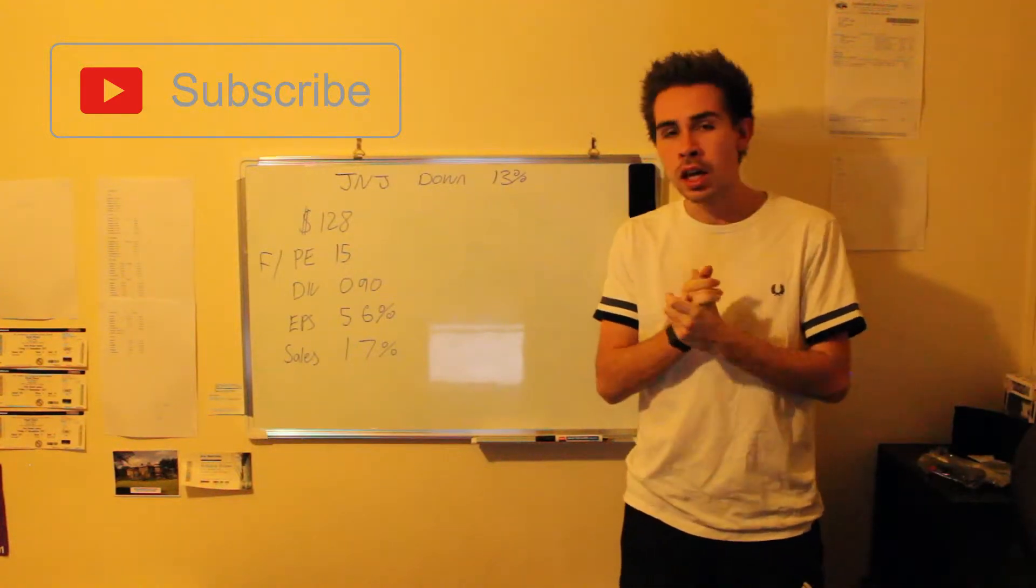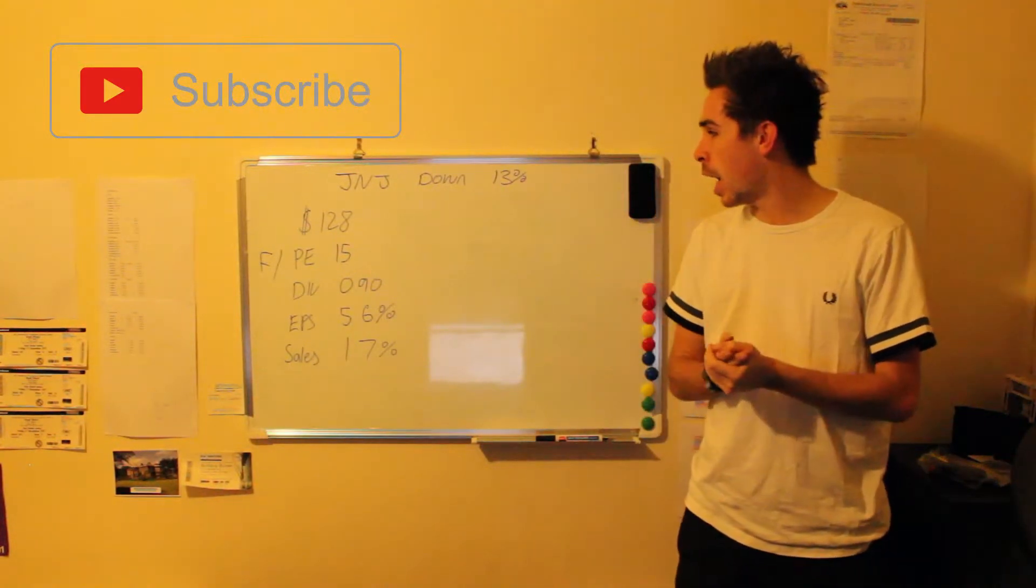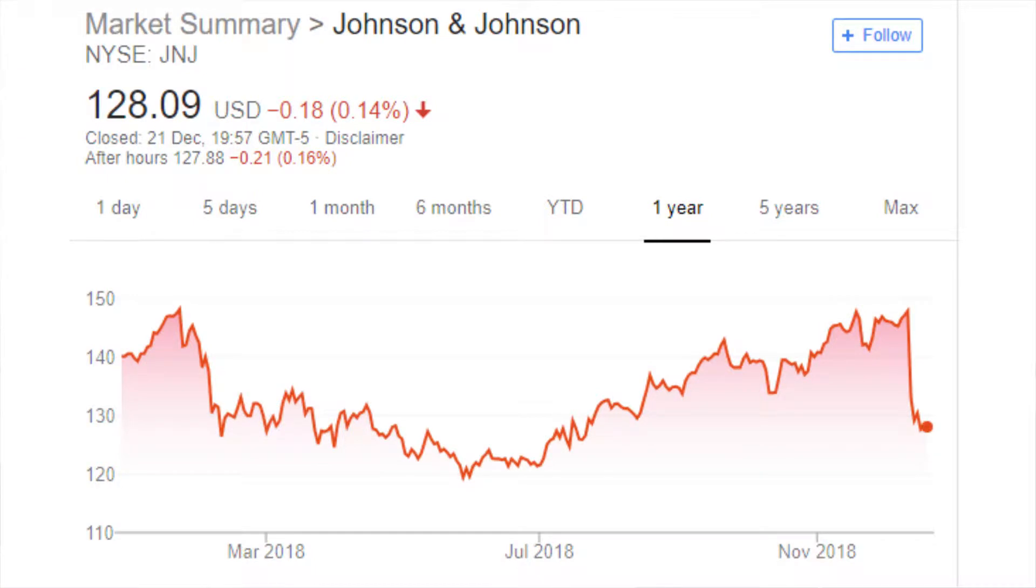Hi everyone, today we're talking about Johnson & Johnson or J&J, and that's down 13% recently because of a news article that came out about asbestos being in one of their products.